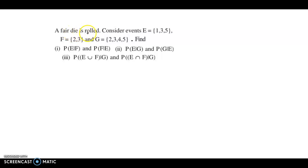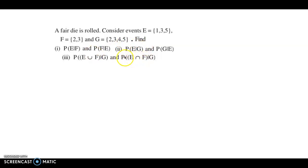A fair die is rolled. Consider the events E which has outcomes 1, 3, 5. Outcomes of event F are 2 and 3. And event G has outcomes 2, 3, 4, 5. We have to find the following conditional probabilities.